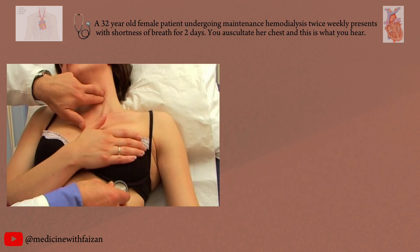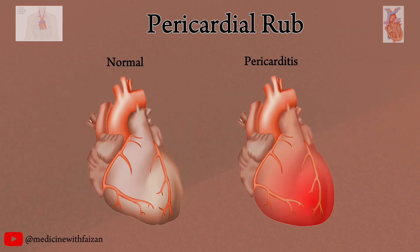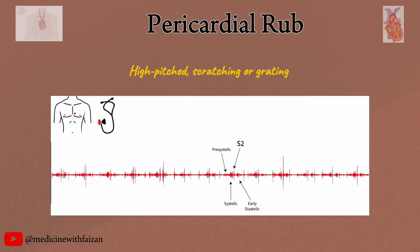A 32-year-old female patient undergoing maintenance hemodialysis twice weekly presents with shortness of breath for two days. You auscultate her chest and this is what you hear. This is a three-component pericardial friction rub. A pericardial friction rub is generated as a result of an inflamed pericardium, that is pericarditis. Friction rubs are high-pitched scratching or grating sounds, best heard with the diaphragm of the stethoscope over the left sternal border.